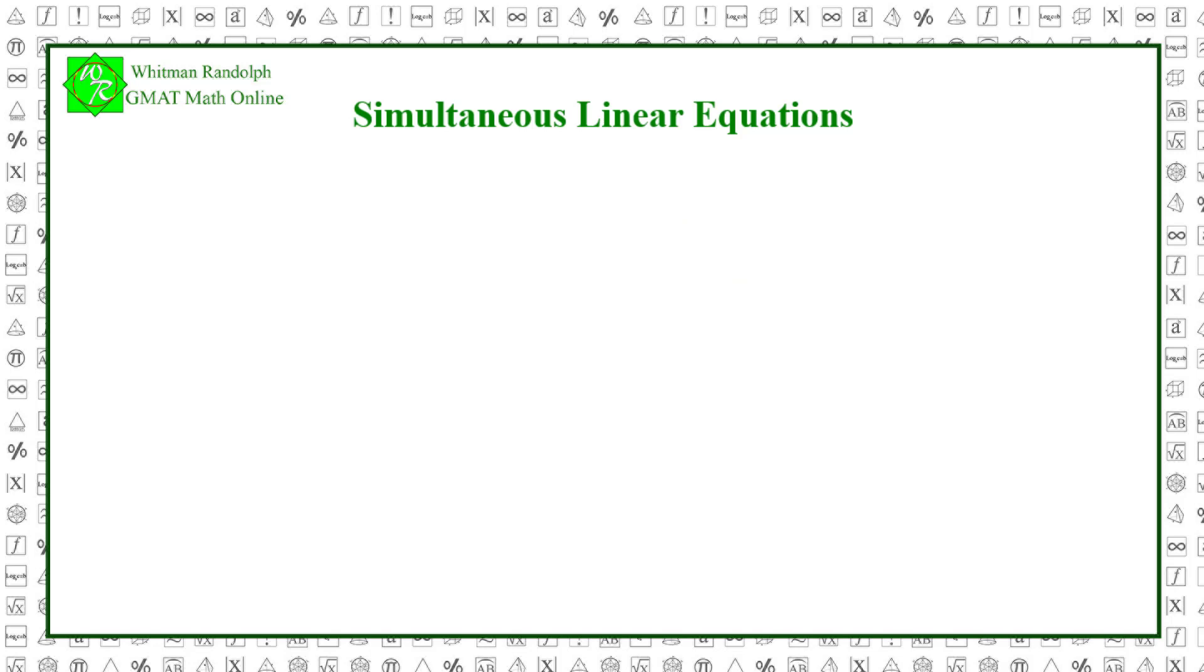We'll use two standard approaches to solving simultaneous linear equations. As an example, we'll use the equations we gave earlier. 3x minus 7 equals y plus 4 and 2x plus 6 equals 4y.